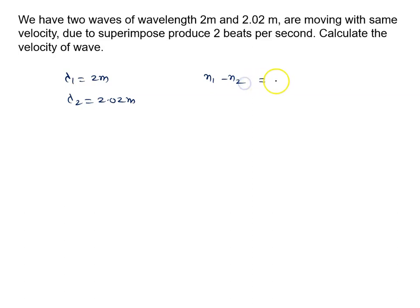n1 minus n2 is given as 2 beats per second. We know that v equals n lambda.